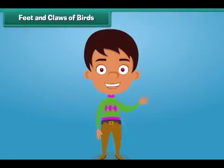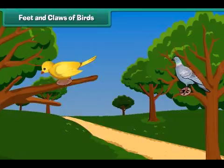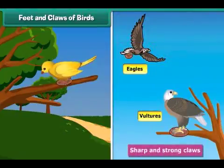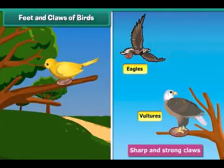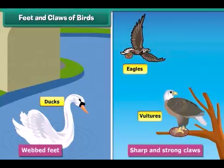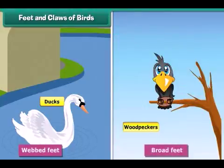Birds walk and hold food with their feet and claws. Different birds use their feet and claws differently. Vultures and eagles have sharp and strong claws to hold small animals, while ducks have webbed feet that help them swim in water. Woodpeckers have broad feet and they use their feet to climb trees.